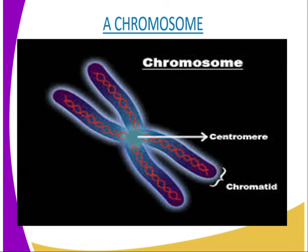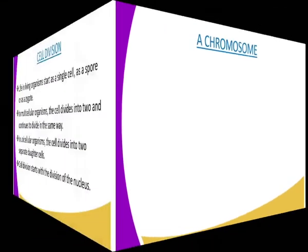Young cells of an organism divide actively and grow before they differentiate into tissues and organs. The ability of cells to divide is located in specific areas where the cells are unspecialized. These include the meristematic cambium cells, the meristematic apical cells in woody plants, and the malpighian layer in mammalian skin. The sequence of events leading to cell division in plants and animals is basically the same.